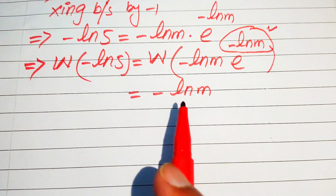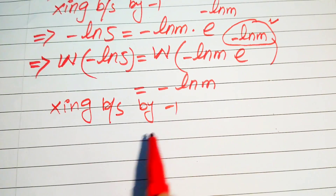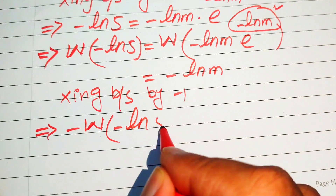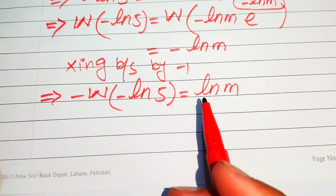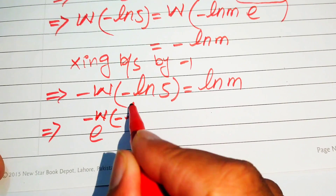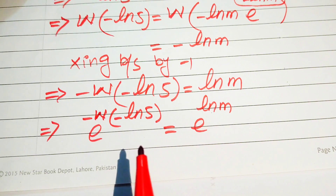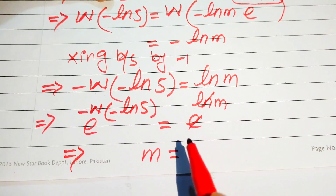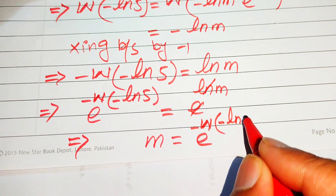To find the value of m, we eliminate the negative sign and the log. First we multiply both sides by minus 1, giving minus W(minus log 5) equals log m. Then we take the antilog on both sides: e to the power of minus W(minus log 5) equals e to the power of log m. The log and antilog on the right cancel, giving m equals e to the power of minus W(minus log 5).